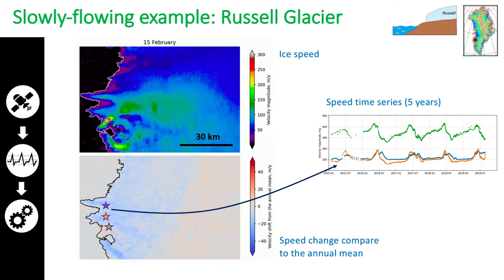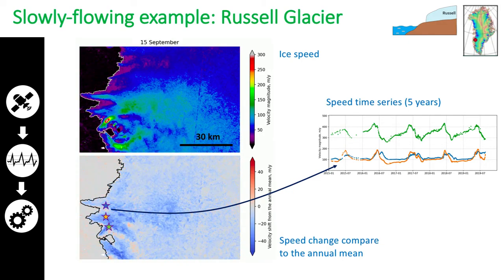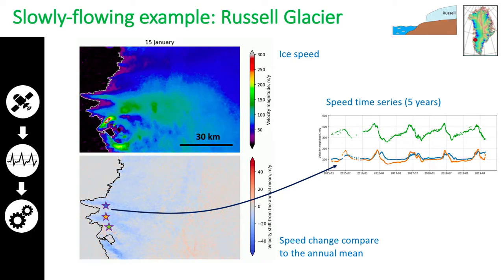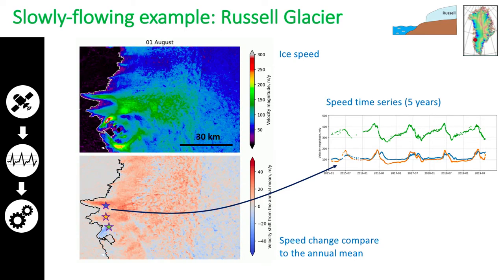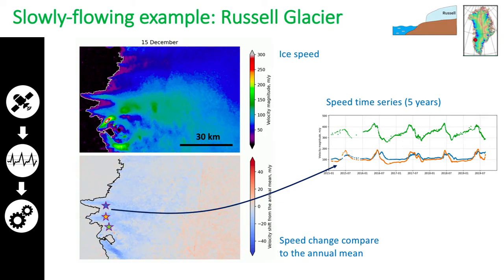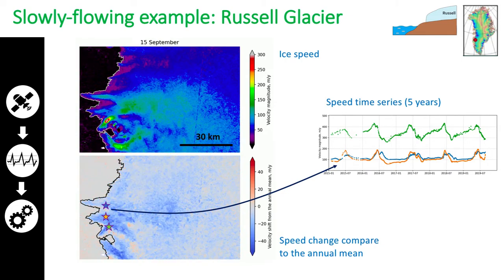Here is another example. While the previously shown Petermann Glacier is a fast-flowing case, Russell Glacier belongs to the slowly-flowing sector. Even here, the data properties, including speed error rate, allow detailed investigation of seasonal processes. It can also be noted that the general data quality is sufficient to use it as input in models. For example, we use the speed maps in inverse modeling of glacier basal conditions to investigate seasonal changes in basal melt as well.